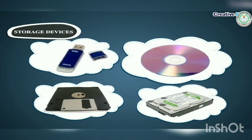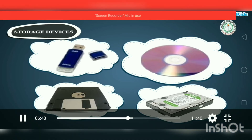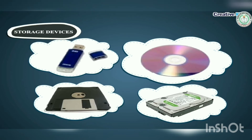Storage devices are used to store data and information in the form of bits and bytes in a computer. A bit is the smallest unit of data and has either a value of 0 or 1. A byte is a group of 8 bits and is the standard unit of storage in a computer. For example, 10110111 is a byte representing data in a computer. Storage devices or memory units are integral parts of a computer system.